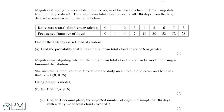Megali is studying the mean total cloud cover in Octas for Lucas in 1987 using data from the large dataset. The daily mean total cloud cover for all 184 days from the large dataset is summarized in the table below. One of the 184 days is selected at random, and part A is to find the probability that it has a daily mean total cloud cover of greater than 6.